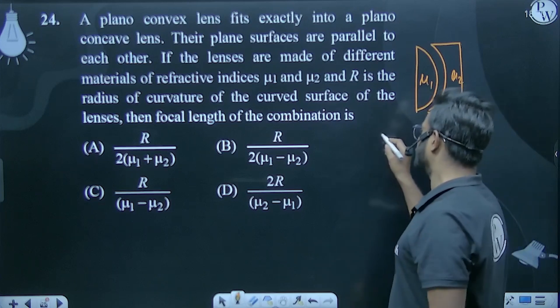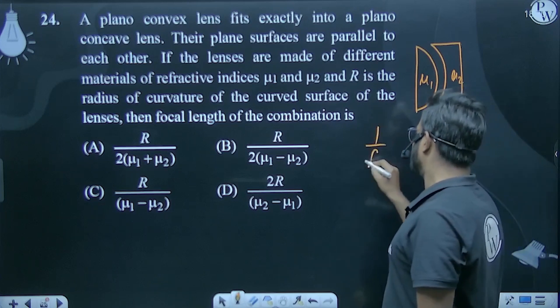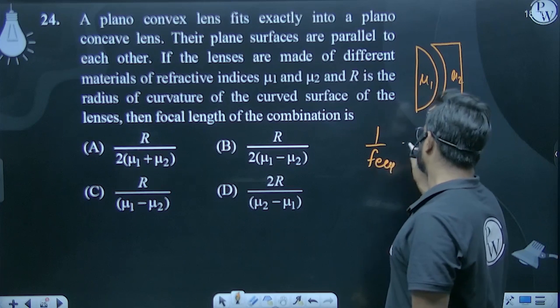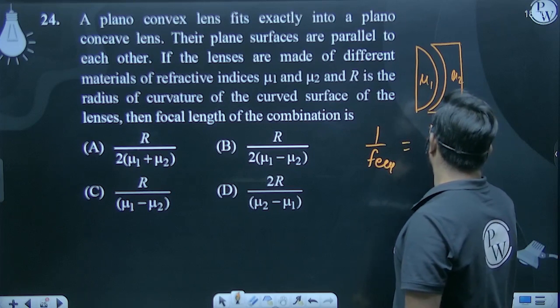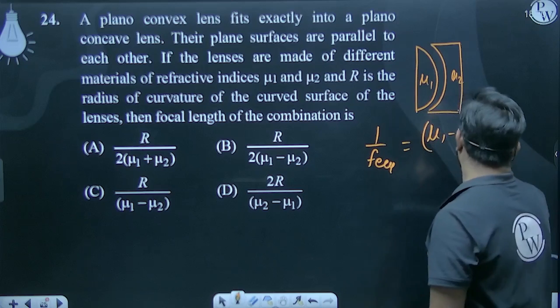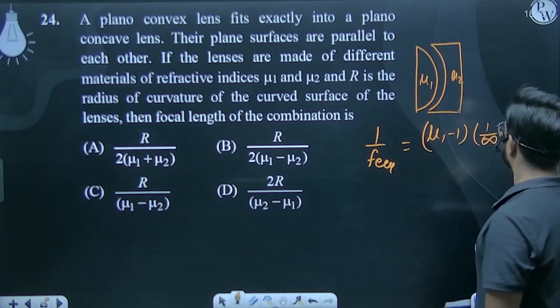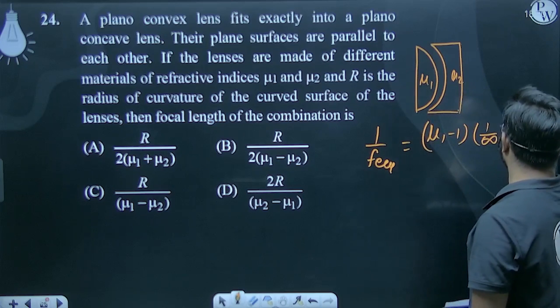We work on both. 1 by f equivalent equals to mu 1 minus 1, 1 by infinity, minus 1 by minus R.